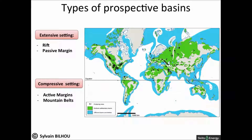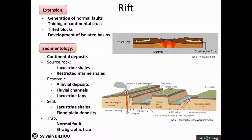Basins developed in extensional settings include rifts and passive margins. Rifts are developed at the first stage of extensional tectonics. The continental crust is thinning, forming a collapse at the surface and volcanism. It is delimited by normal faults, inducing tilting of the crust. These are called tectonic blocks. The consequence is the individualization of small independent sedimentary basins.